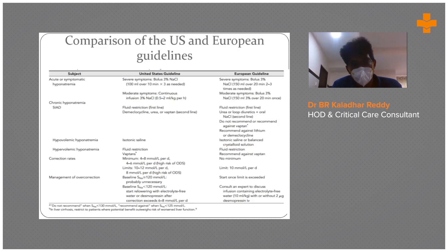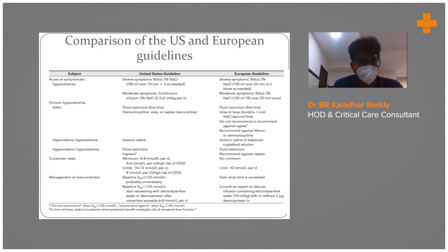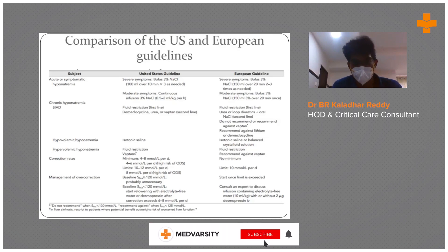In chronic hyponatremia, first try fluid restriction. If the patient is not improving with fluid restriction, you can then go with demeclocycline or vaptans. For hypovolemic hyponatremia, always correct with isotonic saline. For hypervolemic hyponatremia, it is always fluid restriction. But always remember — don't jump straight to vaptans.